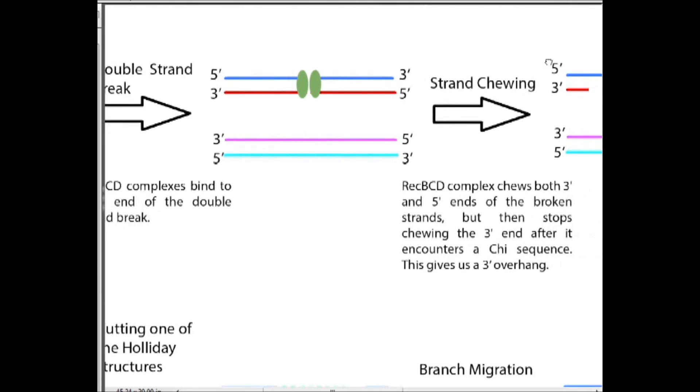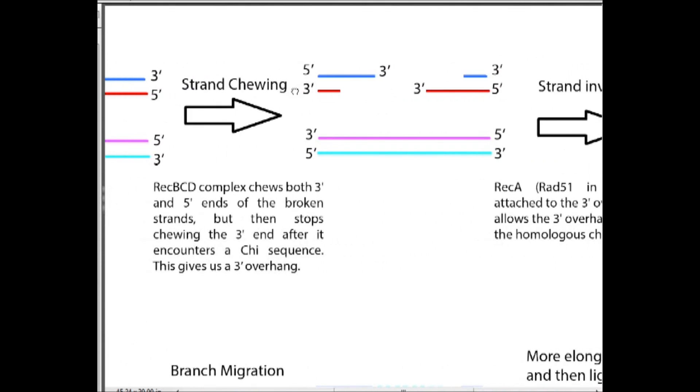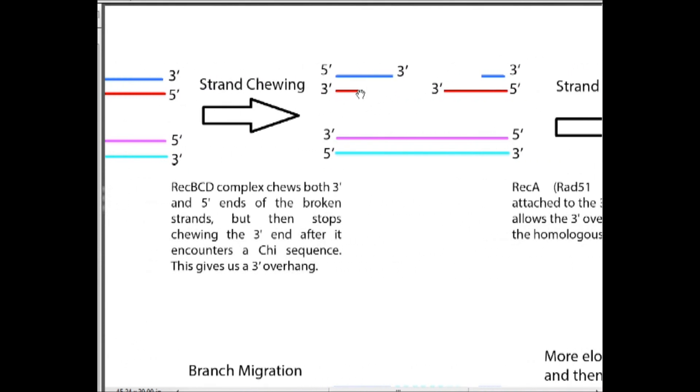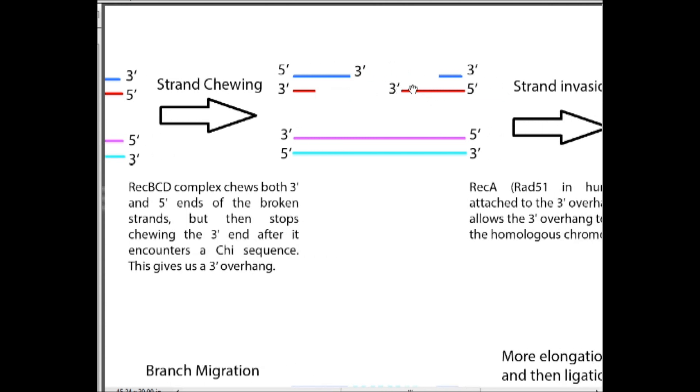That's important because, since it stopped chewing the three prime ends, we get the three prime overhangs. And the three prime overhangs are important because that's what's going to invade the homologous chromosome.